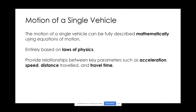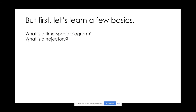Speaking of motion of a single vehicle, this is all based on laws of physics — you've probably seen this in previous physics or kinematics courses, either in undergrad or high school. The motion of a single vehicle can be described mathematically using equations of motion, which provide relationships between key parameters such as speed, acceleration, distance, and travel time.